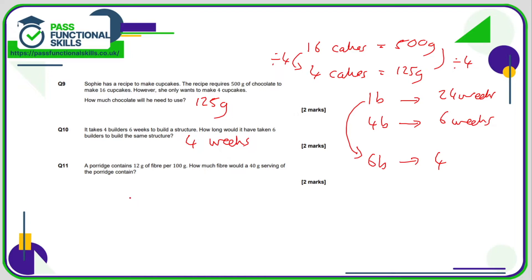Question number eleven. Porridge contains 12 grams of fiber for 100 grams, and we want to work out how much fiber is in 40 grams. I'm going to work out 10 grams since 40 and 100 are both multiples of 10. 10 grams is 10 times less than 100, so that would be 1.2 grams of fiber, 12 divided by 10. 40 grams is going to be four times 1.2 because 40 is four times bigger than 10, and 1.2 multiplied by four, or 12 times four is 48, so that's going to be 4.8 grams.